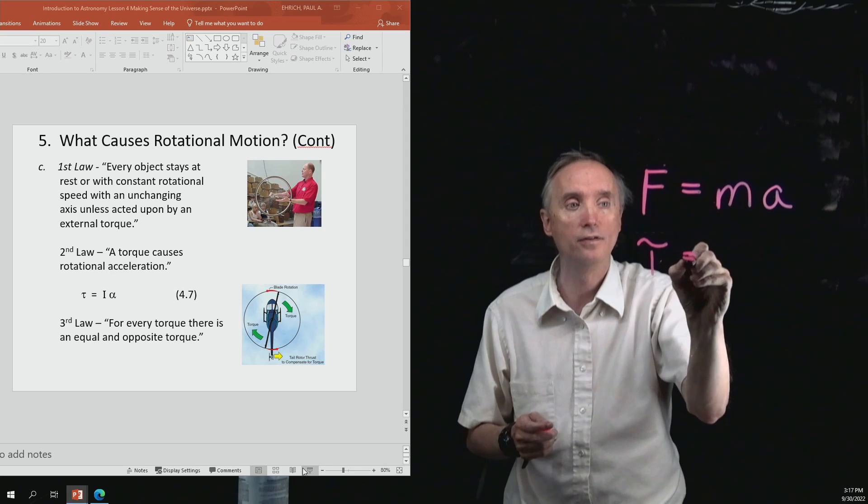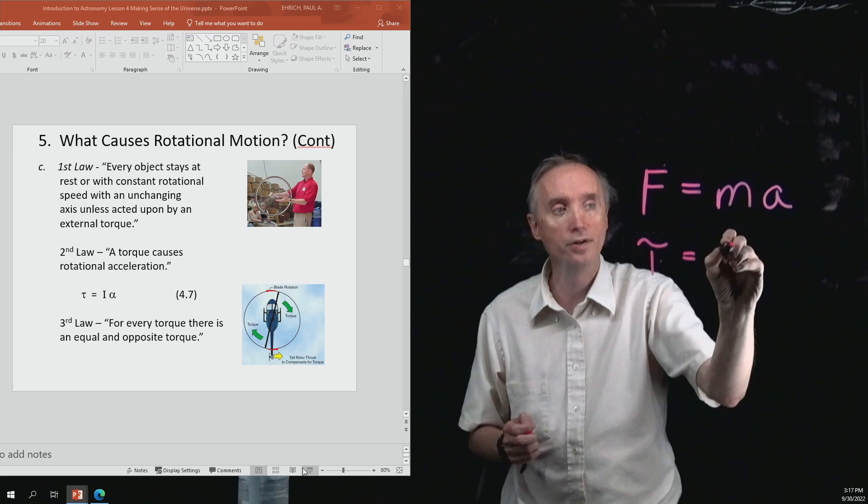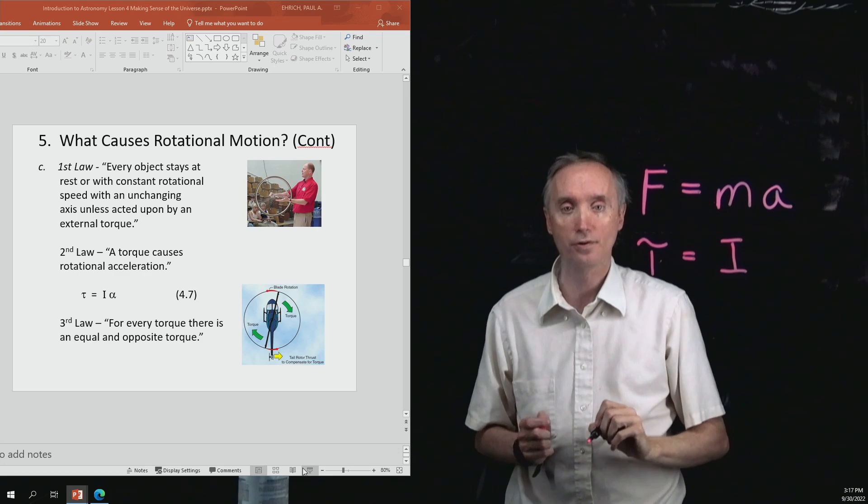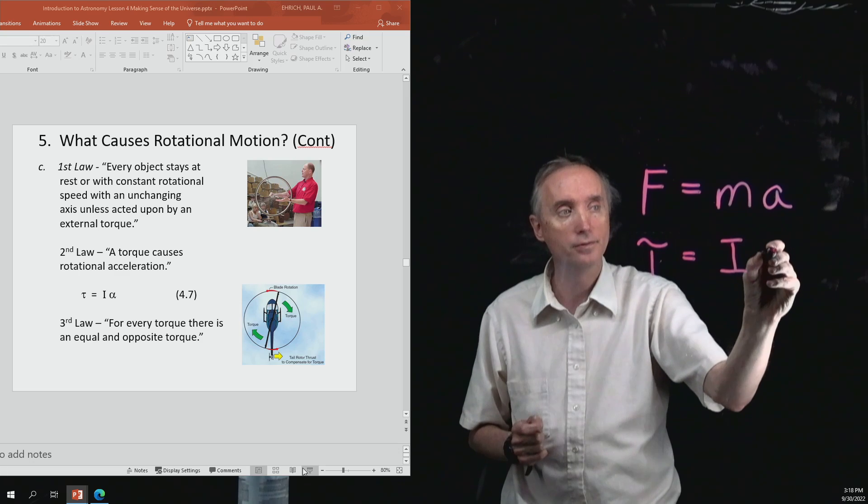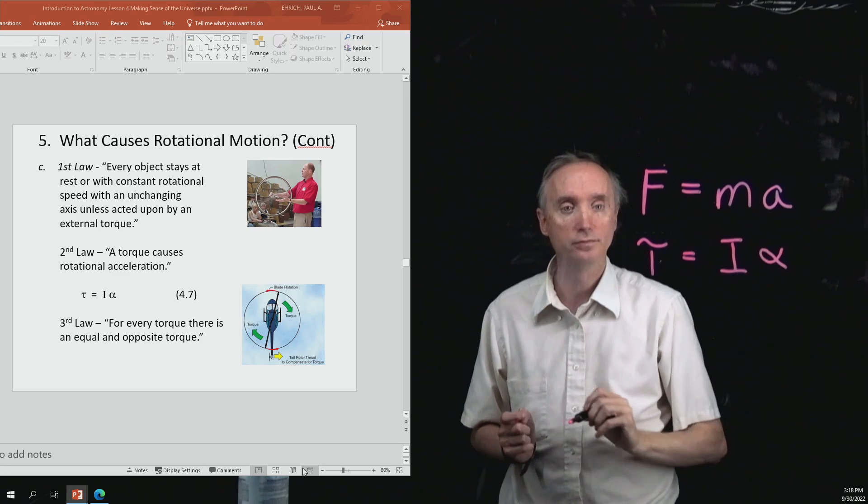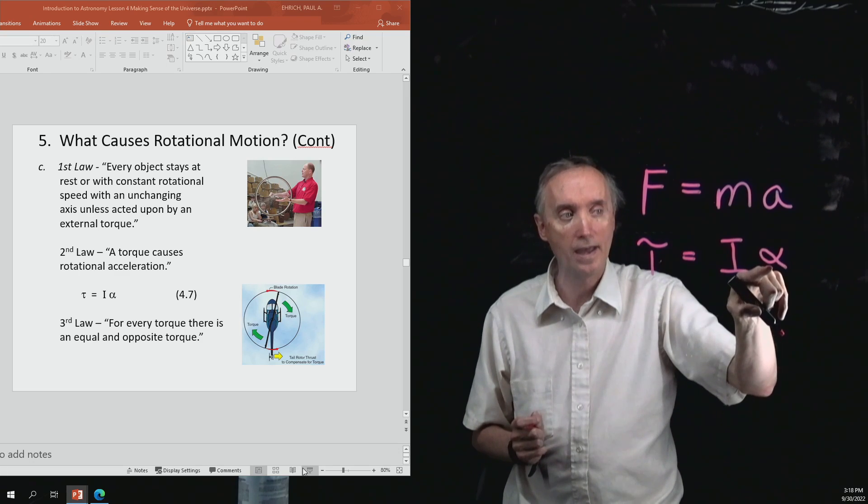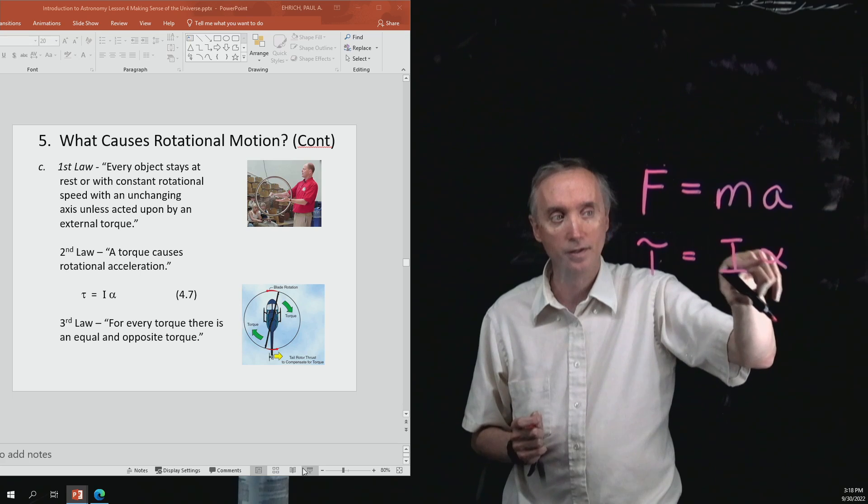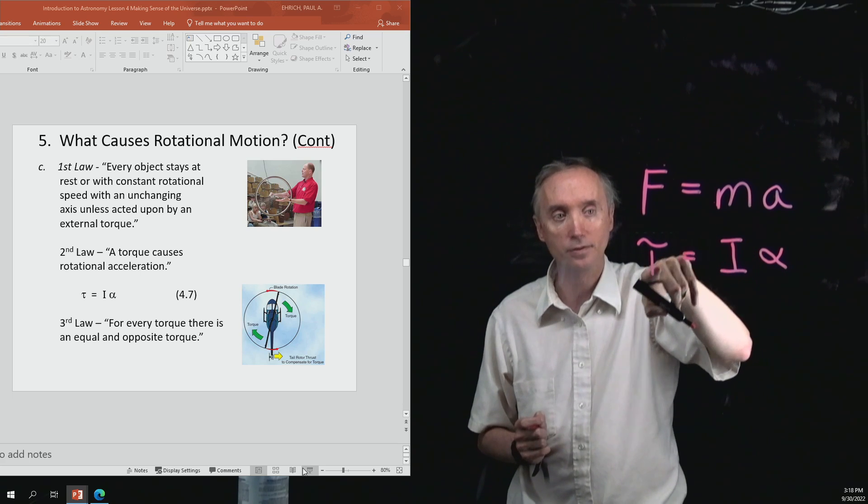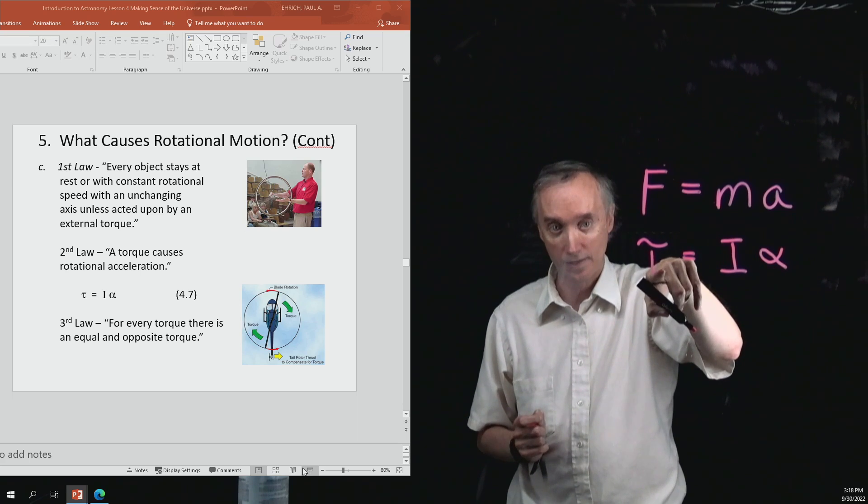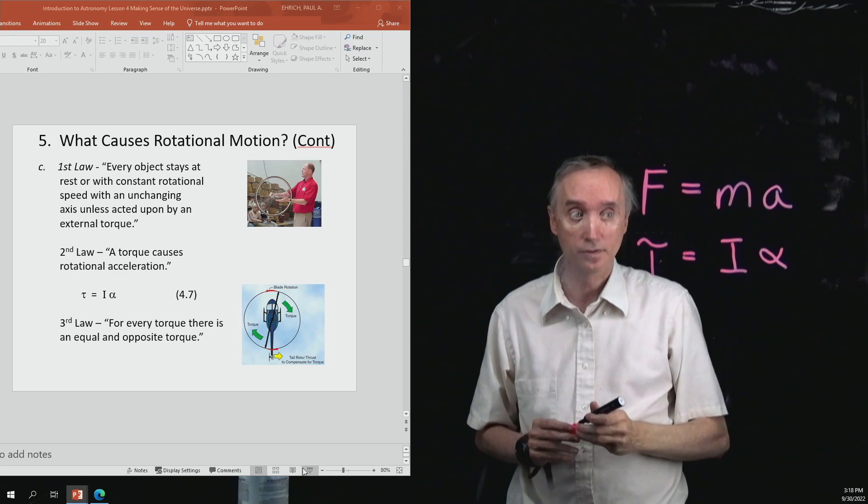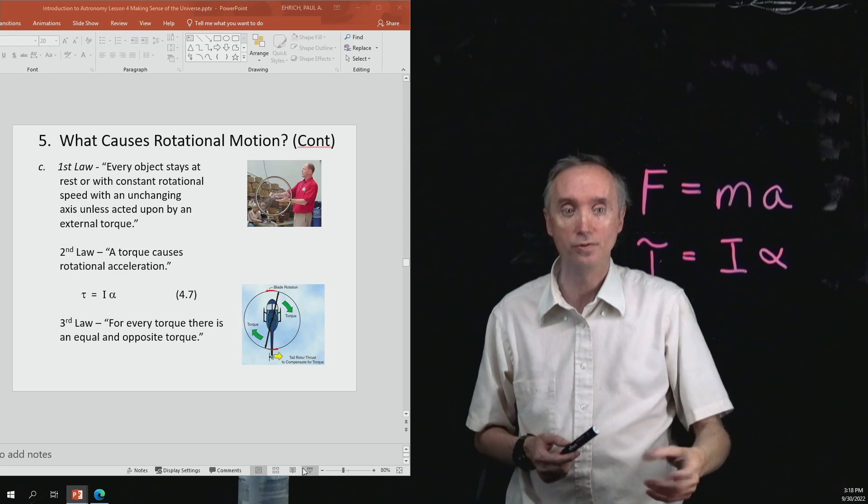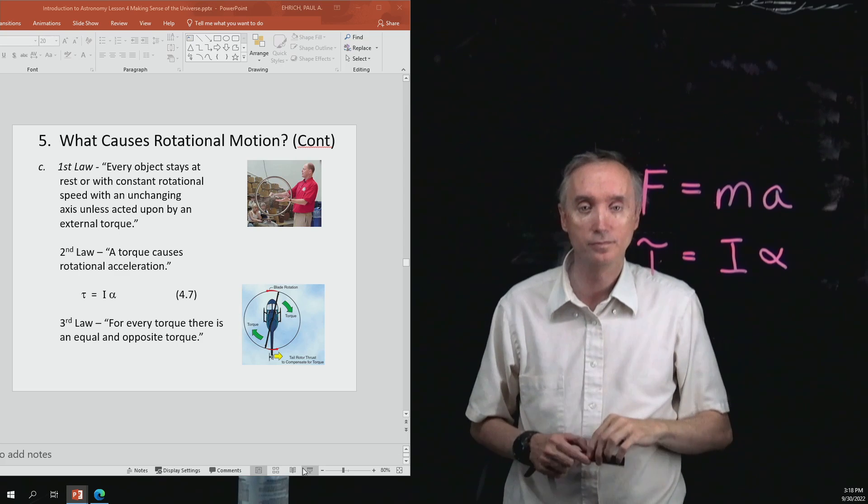Instead of M, we learned it's I, the moment of inertia of the object. And then instead of the letter A, it's alpha. So that's the angular acceleration. This is the moment of inertia. And then this is the torque. And so this would be Newton's second law of motion. Torques cause objects to accelerate when they rotate.